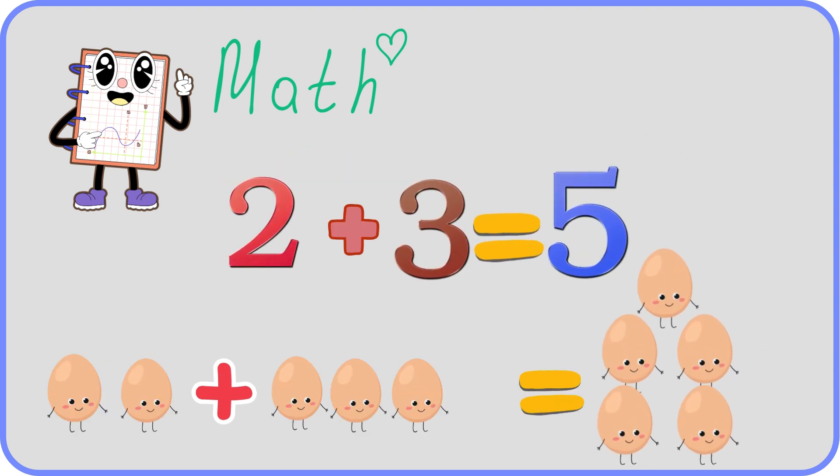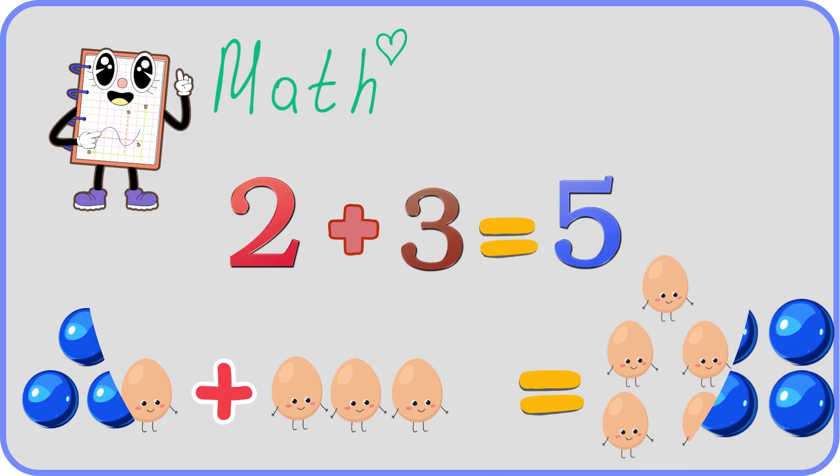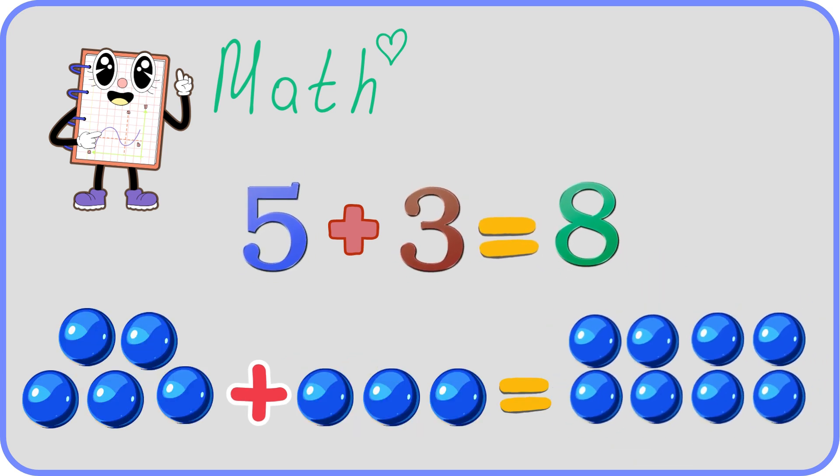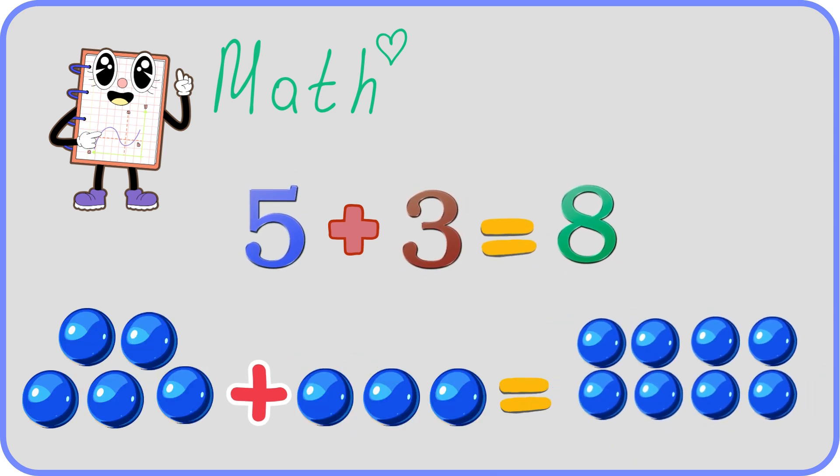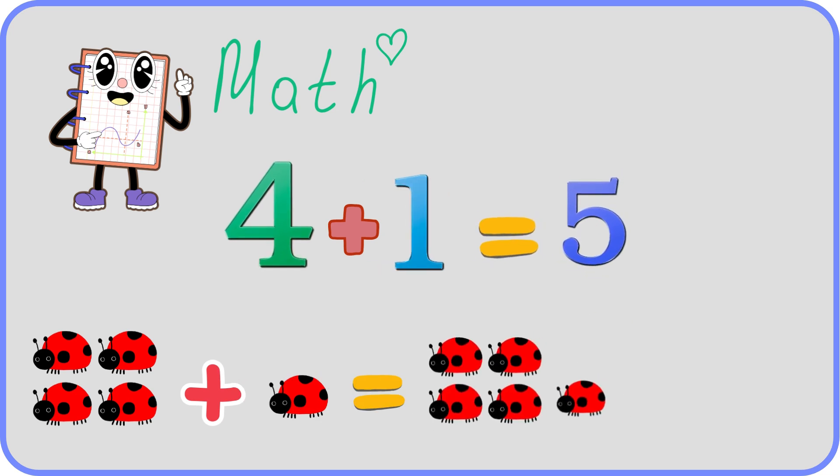Two plus three equals five. Five funny eggs. Five plus three equals eight. Eight shiny blue marbles. Four plus one equals five.